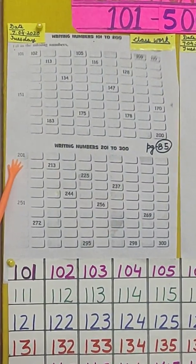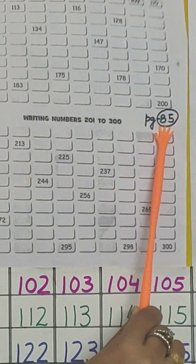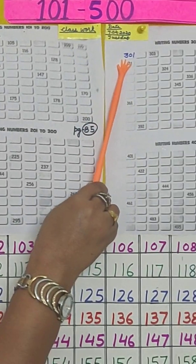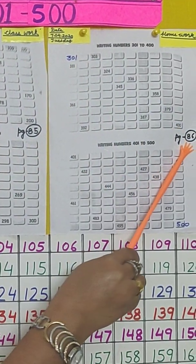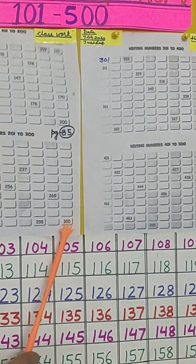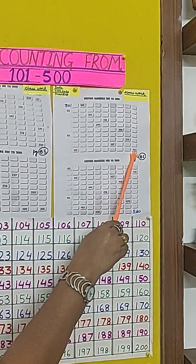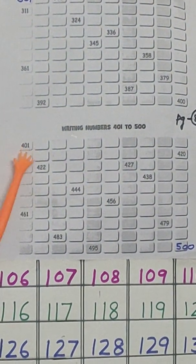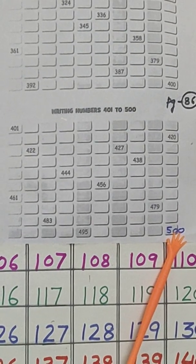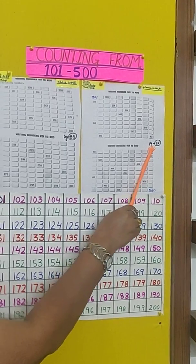The same pattern will follow from 201 to 300. Complete page number 85 of your pearl book. The same will continue for page number 86 — you will start counting from 301 to 400, and again from 401 to 500. Is it clear, students? You will be completing page number 85 as well as page number 86 of your pearl book.